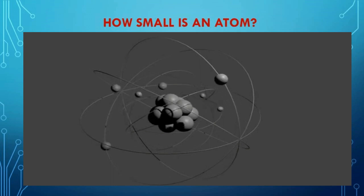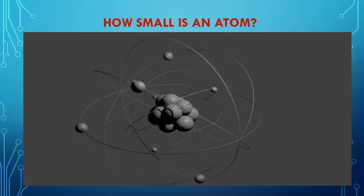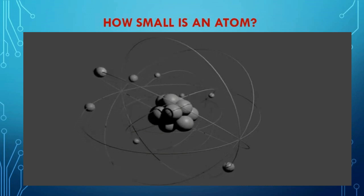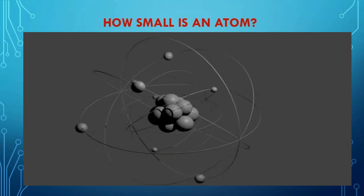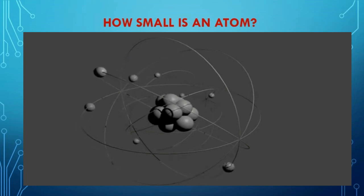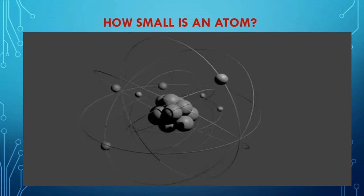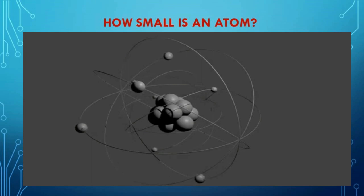Every substance is made up of atoms in one form or other. Different kinds of atoms have different properties, both physical and chemical. Scientists wanted to find out what particles are present inside an atom and how these particles are arranged. For explaining this, many scientists proposed various atomic models. We have learnt Dalton's atomic theory and J.J. Thomson's model in class 8. Now we will learn about subatomic particles and other atomic models.